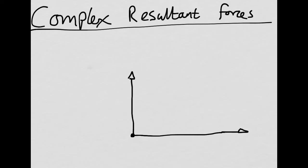I'll just show you the process before I show you it with a scale diagram. Have a look at these two forces — they're at right angles to each other. How do we find the resultant force? You can probably tell what direction it's going to go in; it's probably going to go in that sort of direction.